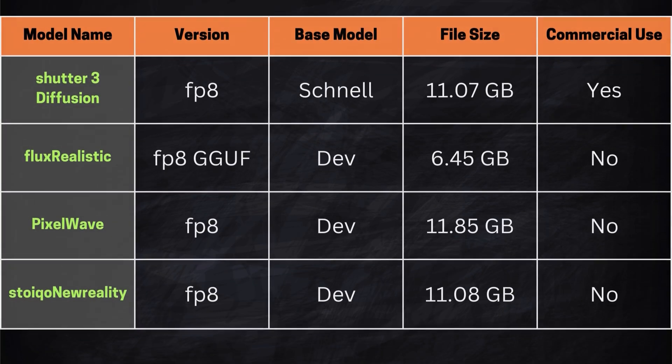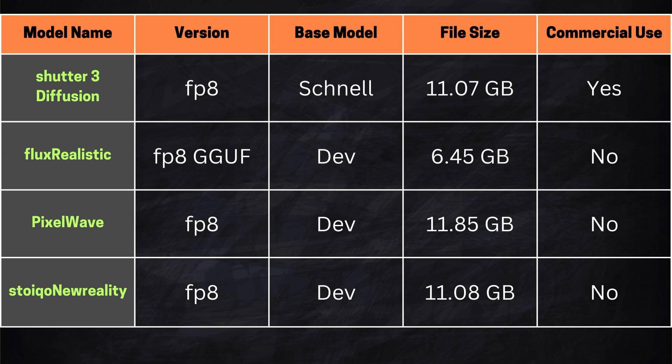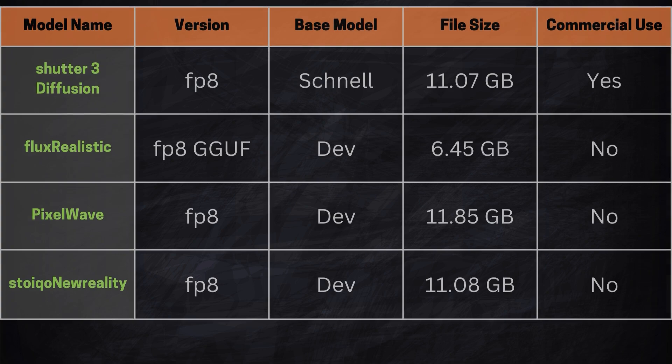So which model is best? After comparing these models, Pixel Wave clearly stands out as the best overall. Flux Realistic and Stoico New Reality deliver similar results, with Stoico New Reality being slightly ahead in some cases. However, Flux Realistic is a quantized model with a file size of only 6.45GB — much smaller than the 11GB+ sizes of the other models — which makes its performance even more impressive. But we haven't tested how these models perform when paired with LoRA yet. That might shake up the rankings, so let's find out.